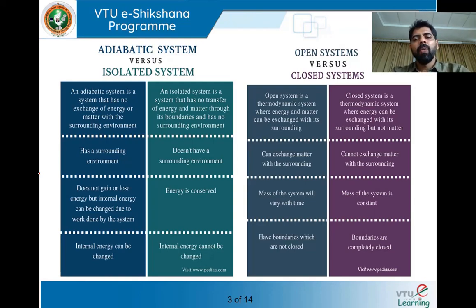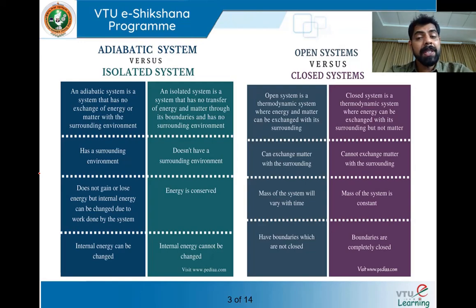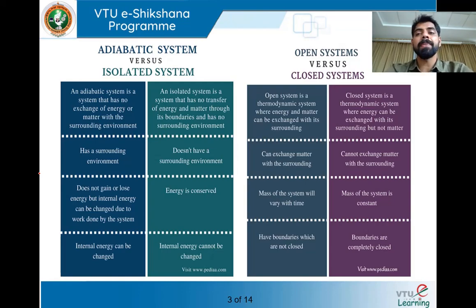Now let us see the difference between an open system and a closed system. An open system is one in which both mass as well as energy cross the system boundary. Mass can go out and mass can come in; energy transfer can be out of the system or into the system. Such a system is what we call an open system.